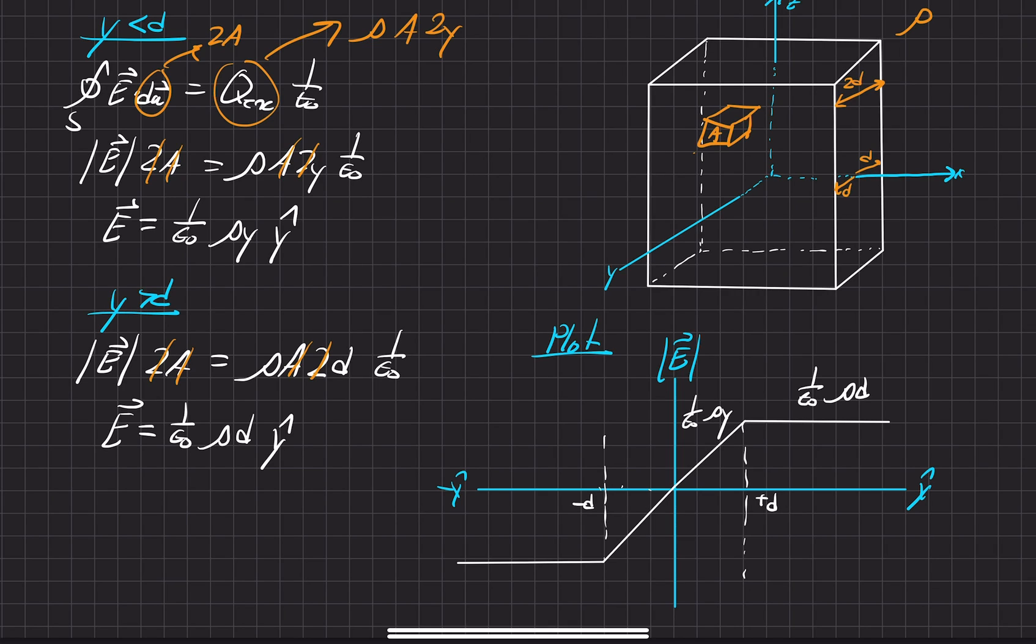And then it drops off for a negative 1 over epsilon naught, rho times d. And so that's what it looks like for the plot for this problem right here.